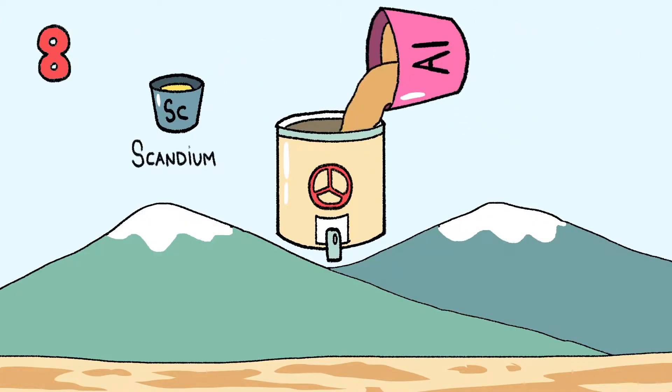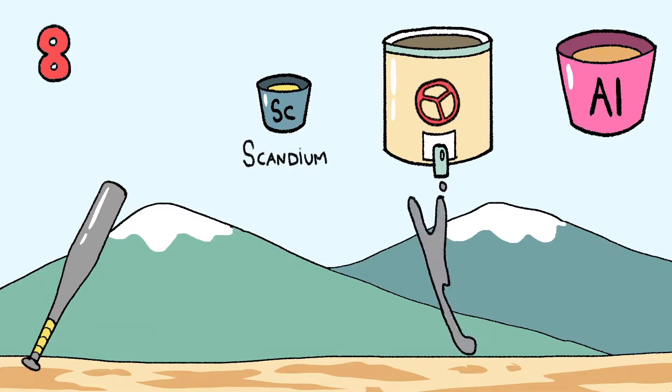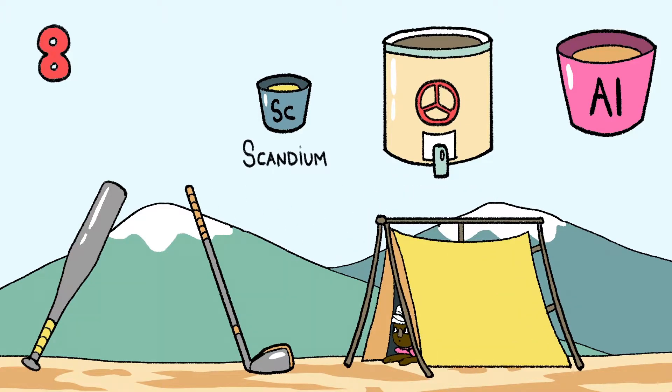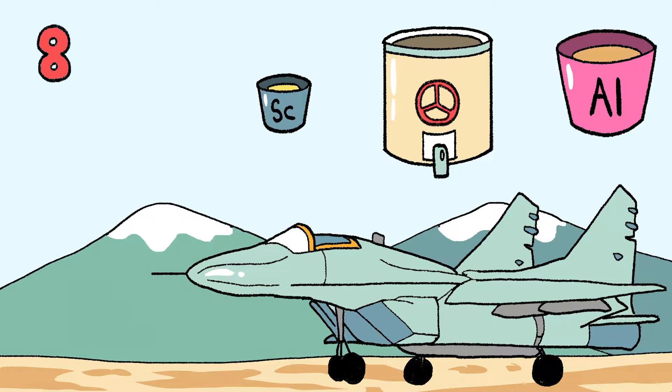Scandium is mixed with aluminum in baseball bats, golf clubs, and tent poles. Oh, and also in the MiG-29 fighter jet.